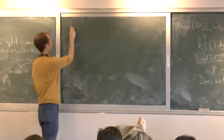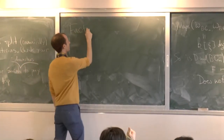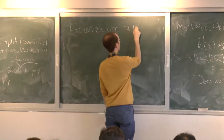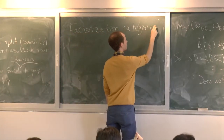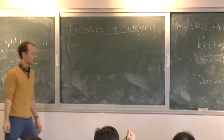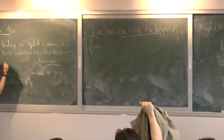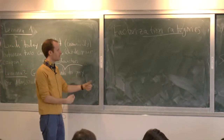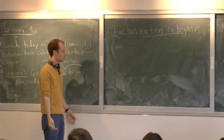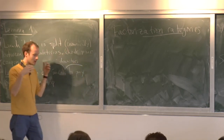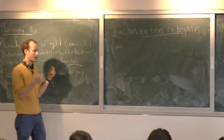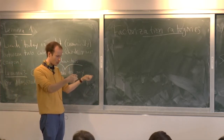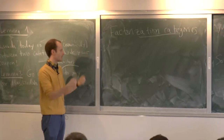The title for this talk is Factorization Categories. Yesterday we went over factorization spaces. The Affine Grassmannian was the key example for us. Those were spaces that satisfy some kind of weird combinatorial pattern that says that they're the product at different points, but the points are allowed to collide, and then they become the same.